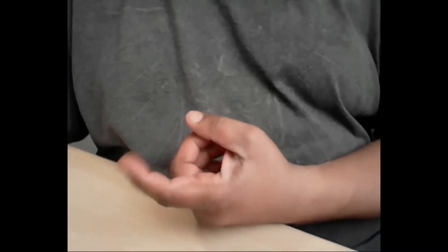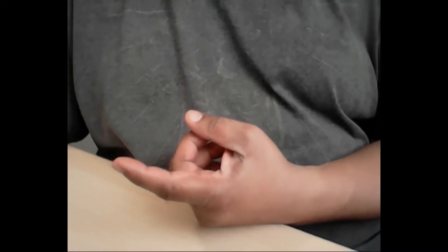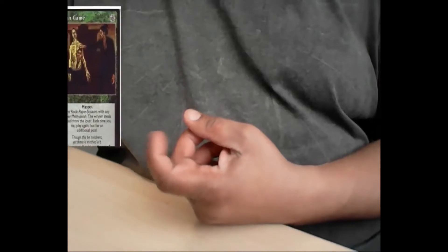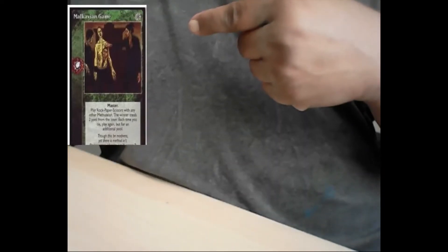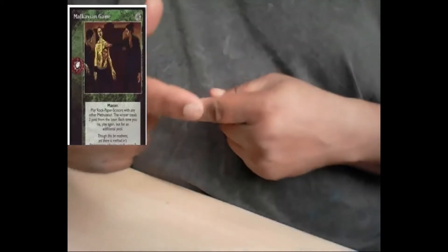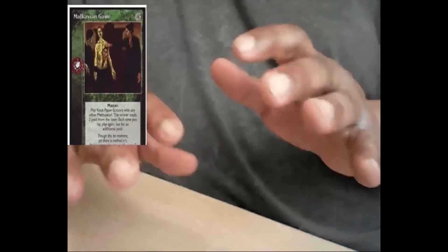So this is the card that caused the dispute. This card called Malkavian Game is the card that caused the rules dispute in the game. Before we get any further into that, just to give you a little bit of context, I want to tell you just a little bit about Vampire the Eternal Struggle.